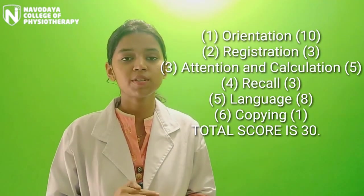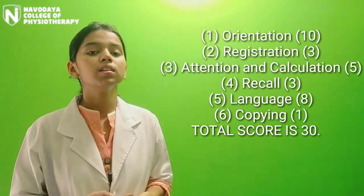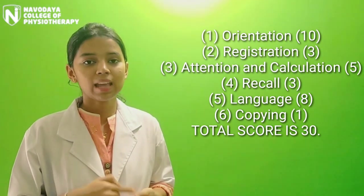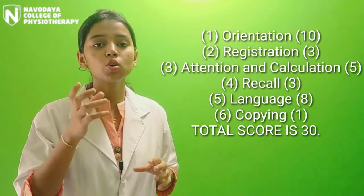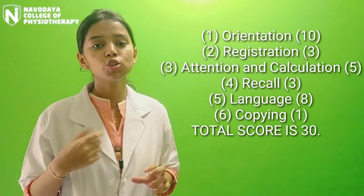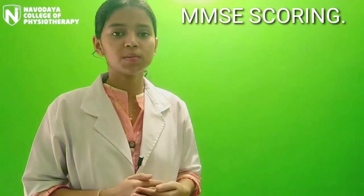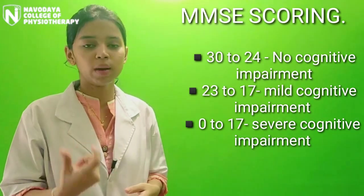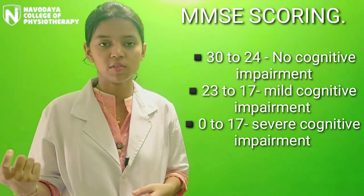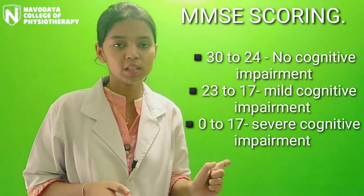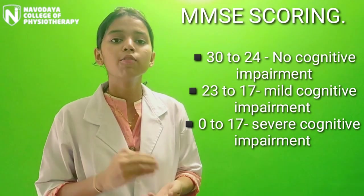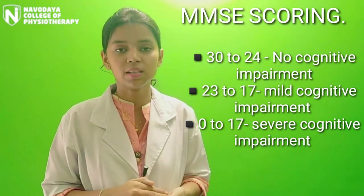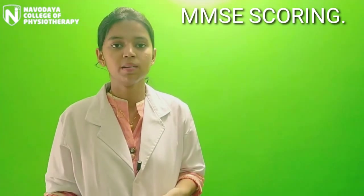All the scores collected from the 6 categories — Orientation, Registration, Attention and Calculation, Language, Recall, and Copy — should be added up and a total score out of 30 should be given. If the patient scores between 24 and 30, they are considered to have no cognitive impairment. If they score between 17 and 23, it is mild to moderate cognitive impairment. If they score between 0 and 17, it is considered severe cognitive impairment.